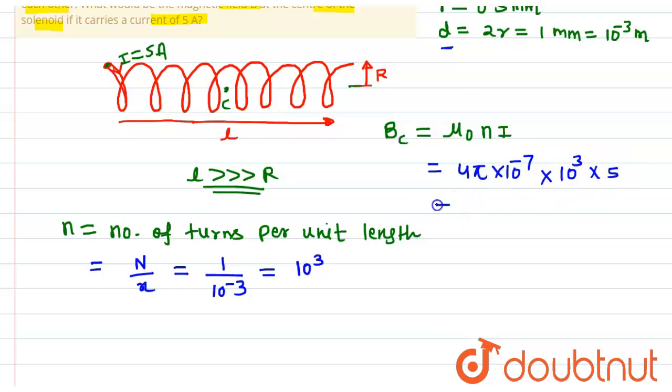We can say that 4 times 5 will be 20π multiplied by 10 to the power minus 4. We can write it as 2π multiplied by 10 to the power minus 3.